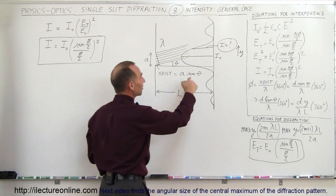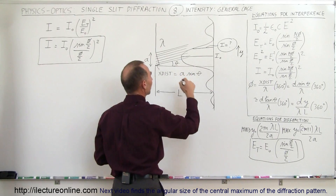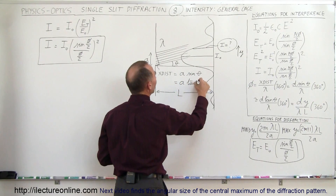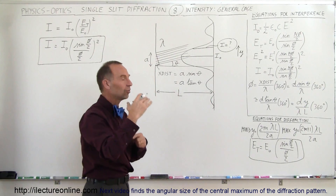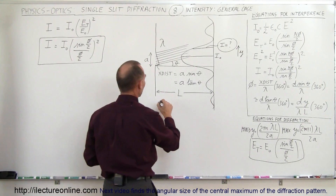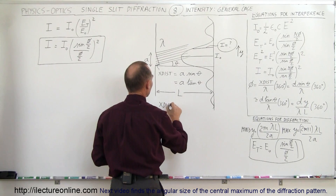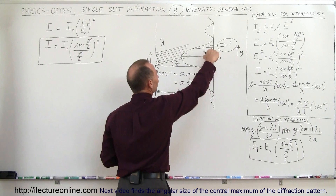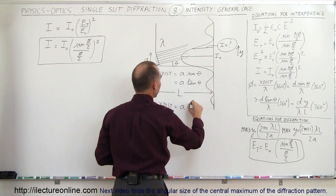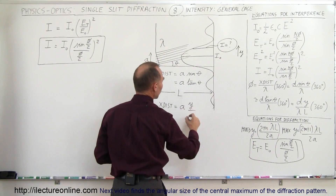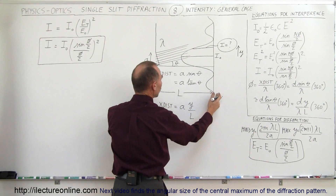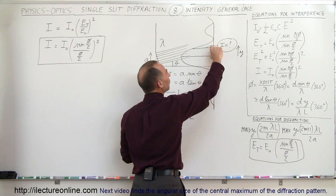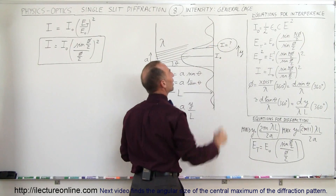Since the angle is very small, this can be written as A times the tangent of theta. By definition, tangent of theta is opposite over adjacent, so the extra distance traveled between the top and bottom of the beam is equal to A times Y divided by L, where L is the distance from the slit to the screen, and Y is the distance from the center maximum to the point of interest.